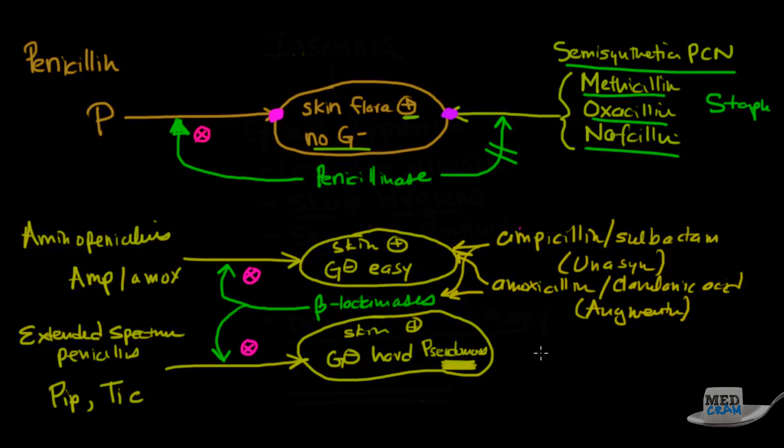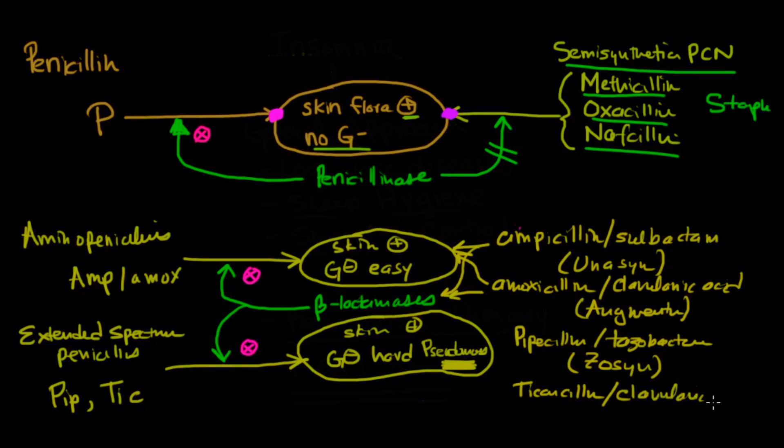And that would do the same thing. We would be able to attack that bacteria because we would get rid of the beta-lactamase. Similarly, down here, we would take pipercillin and couple it with tazobactam, and we would get a medication called Zosyn. And we could take ticarcillin and couple that with clavulonic acid and come up with the medication Timentin. And these would attack the beta-lactamase to prevent it from eating the beta-lactam ring.